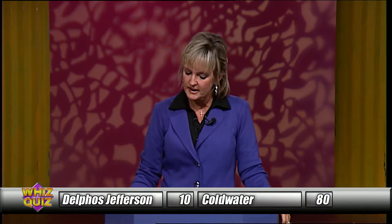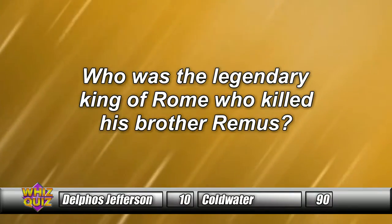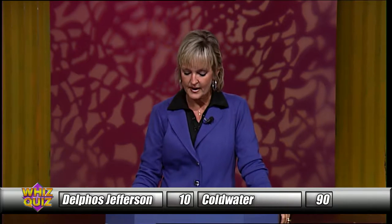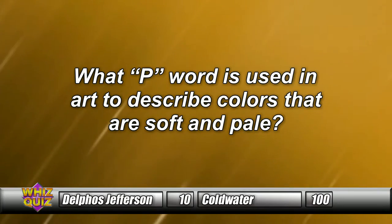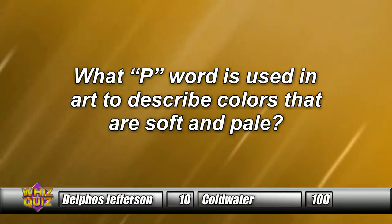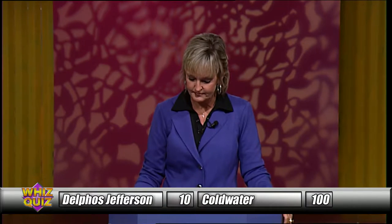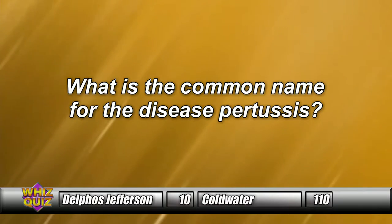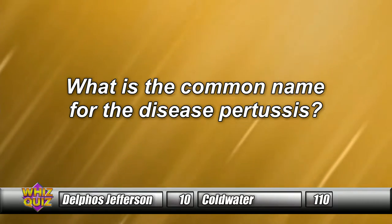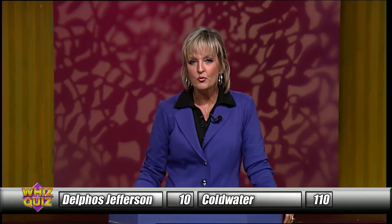Who was the legendary king of Rome who killed his brother? Coldwater answers — 'Romulus' — Romulus is correct. What P word is used in art to describe colors that are soft and pale? Coldwater answers — 'Pastel' — pastel is correct. What is the common name for the disease pertussis? Coldwater answers — 'Whooping cough' — whooping cough is correct.